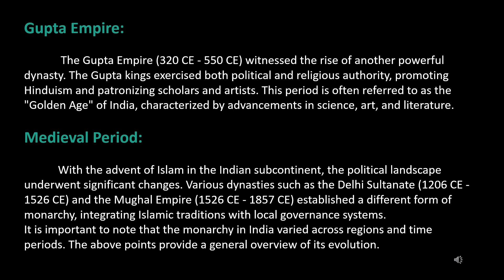With the advent of Islam in the Indian subcontinent, the political landscape underwent significant changes. Various dynasties such as the Delhi Sultanate (1206–1526 CE) and the Mughal Empire (1526 CE–1857 CE) established a different form of monarchy, integrating Islamic traditions with local governance systems. It is important to note that monarchy in India varied across regions and time periods.